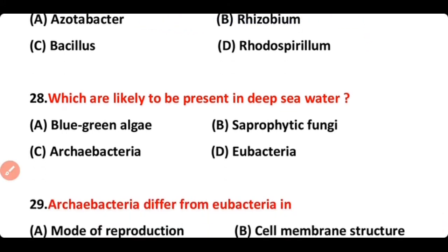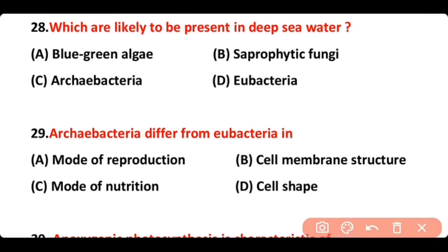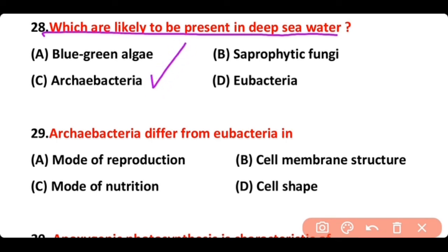Question 28. Which are likely to be present in deep sea water — blue-green algae, saprophytic fungi, archaeobacteria, or eubacteria? The correct answer is option C — archaeobacteria are more likely to be present in deep sea water.